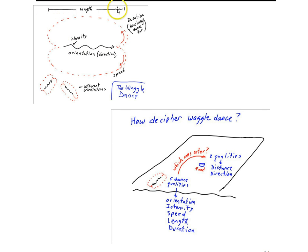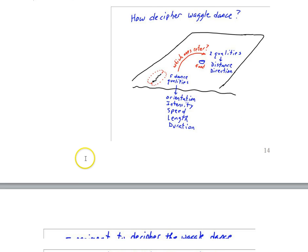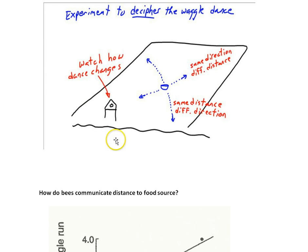And furthermore, the length of the waggle run would change as the distance to the food changed. So this was one strategy, then, for how to figure out what the dance meant—to decipher the language of the waggle dance—was to systematically change the food and watch what parts of the dance would change.